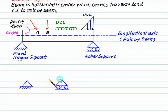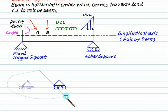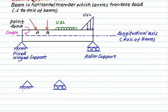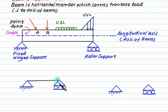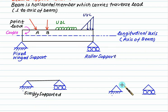Depending upon the support position we can classify the beam as simply supported beam, overhang beam, cantilever beam, or continuous beam. If we have the support at the end of the beam it is called a simply supported beam. If a simply supported beam has some portion extended either to the right side or to the left side, it is called an overhang beam.